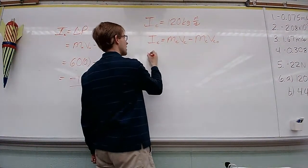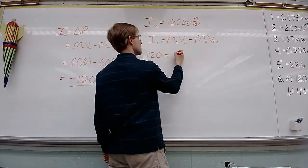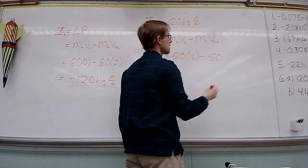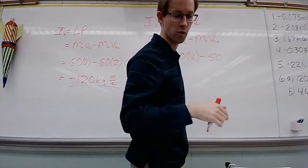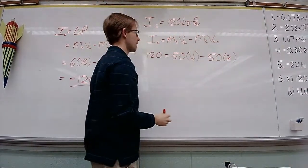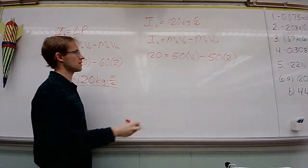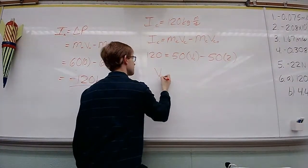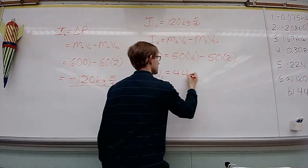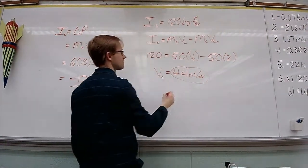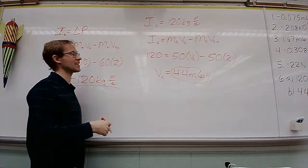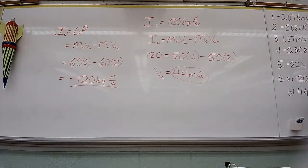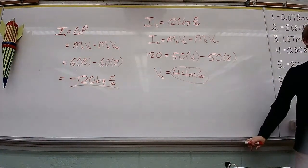So, impulse of the cart is 120. Mass of the cart is 50. Times velocity, that's what we're looking for. 50, and the original velocity of the cart was 2. So, you have yourself a little algebra equation here, and if you carry this through, the velocity of the cart is going to be equal to 4.4. This was a tough one. I remember when I first made this worksheet and went through and did it myself, I had to do this one a couple of times to make sure I got it right. That was a long time ago already.